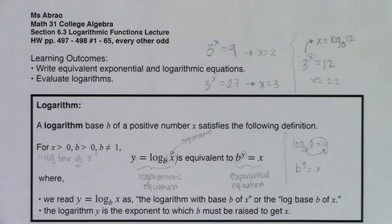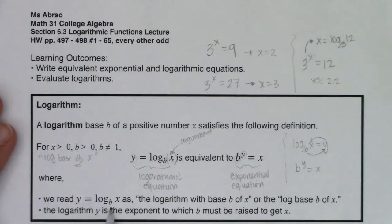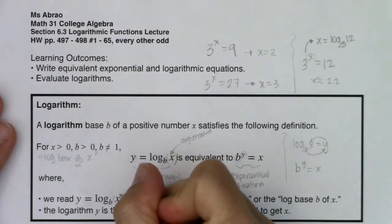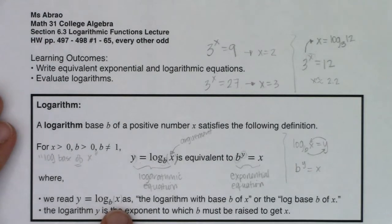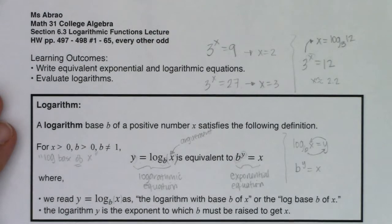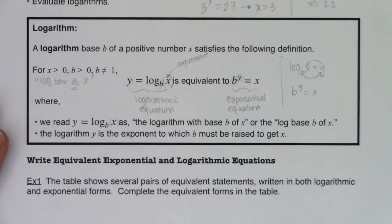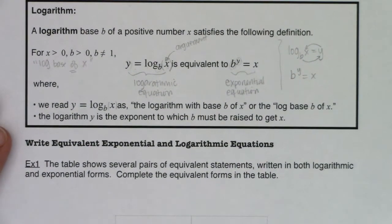We read y equaling log base b of x as 'the logarithm with base b of x' or 'log base b of x' — it's not log base b times x, there is no multiplication symbol in there. The logarithm y is the exponent to which b must be raised to get x. So let's start trying to play with a couple of these.